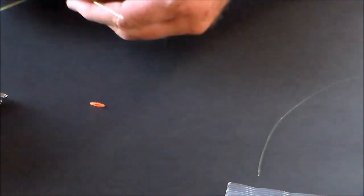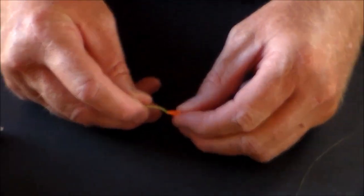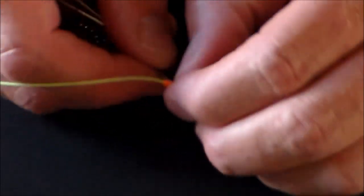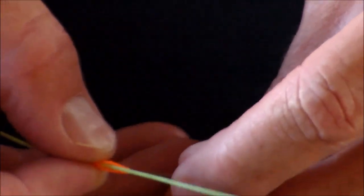To use the leader link, you just take the fly line, thread it through the end of the link. This is a pretty close fit, so it can be a little challenging. You take the leader and thread it through the other end of the link.